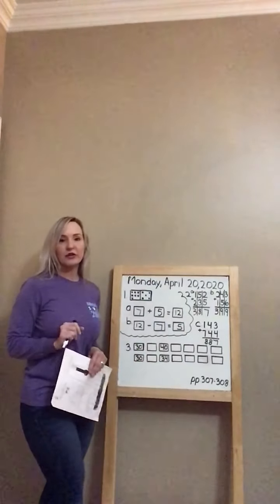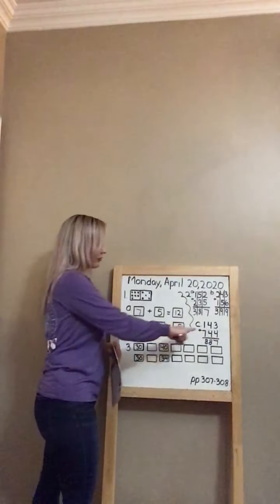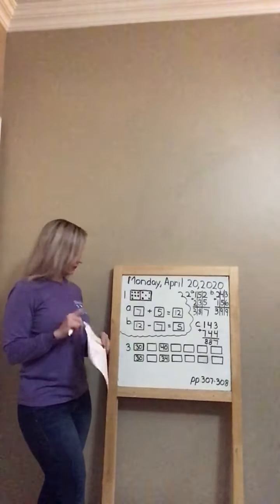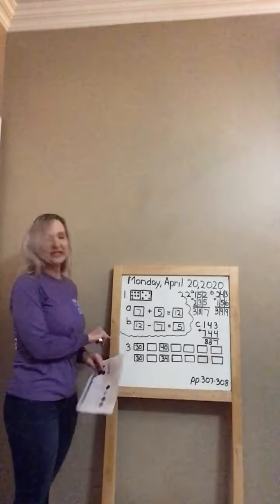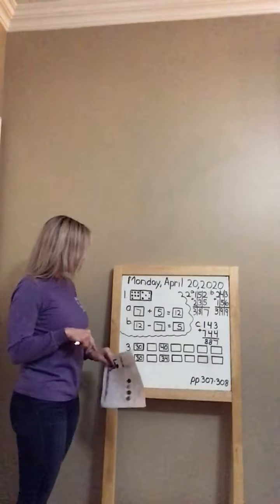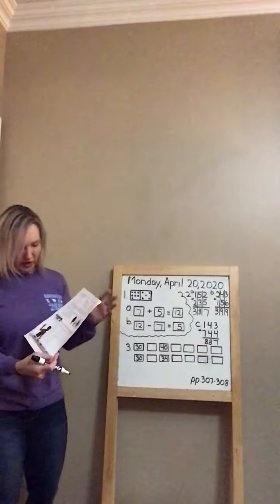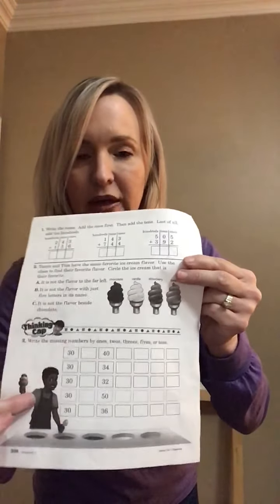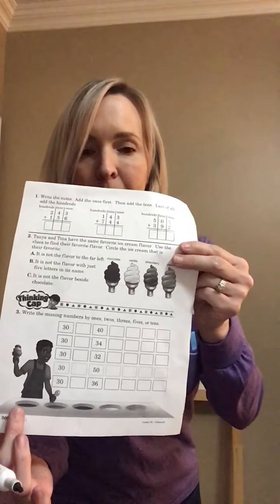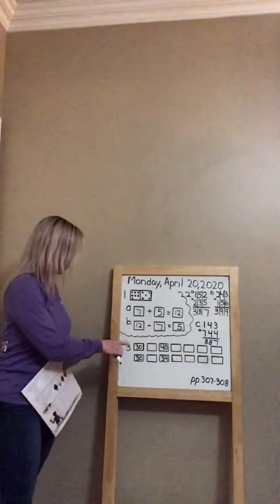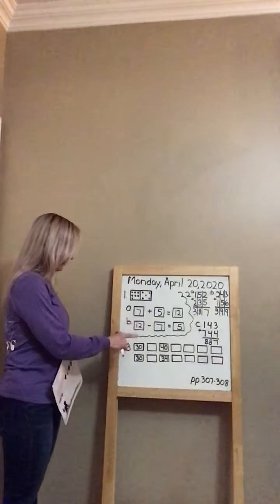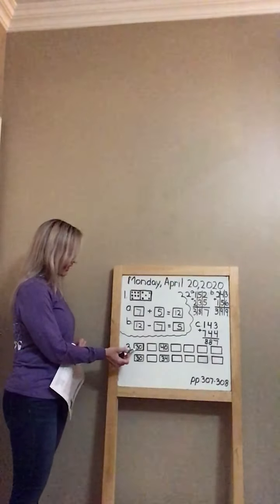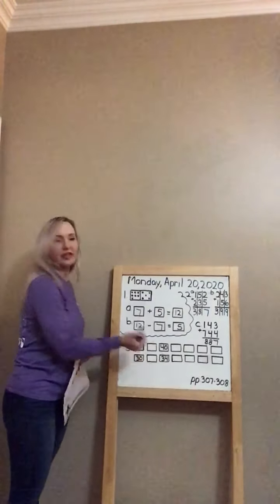At the bottom of your worksheet, page 308, you're going to see a problem that says Thinking Cap. It says: write the missing numbers by ones, twos, threes, fives, or tens. At the very bottom you'll see a bunch of boxes. They've already filled in a couple of the boxes, so you need to decide what you are going to count by to get the same number that they've recorded in the box.